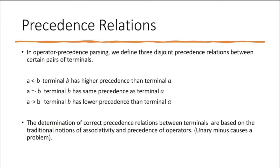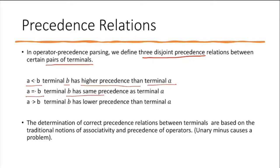In operator precedence parsing, we define three precedence relations between certain pairs of terminals: A less-than B means terminal B has higher precedence than A; A equals B means terminal B has the same precedence as A; and A greater-than B means terminal B has lower precedence than terminal A.